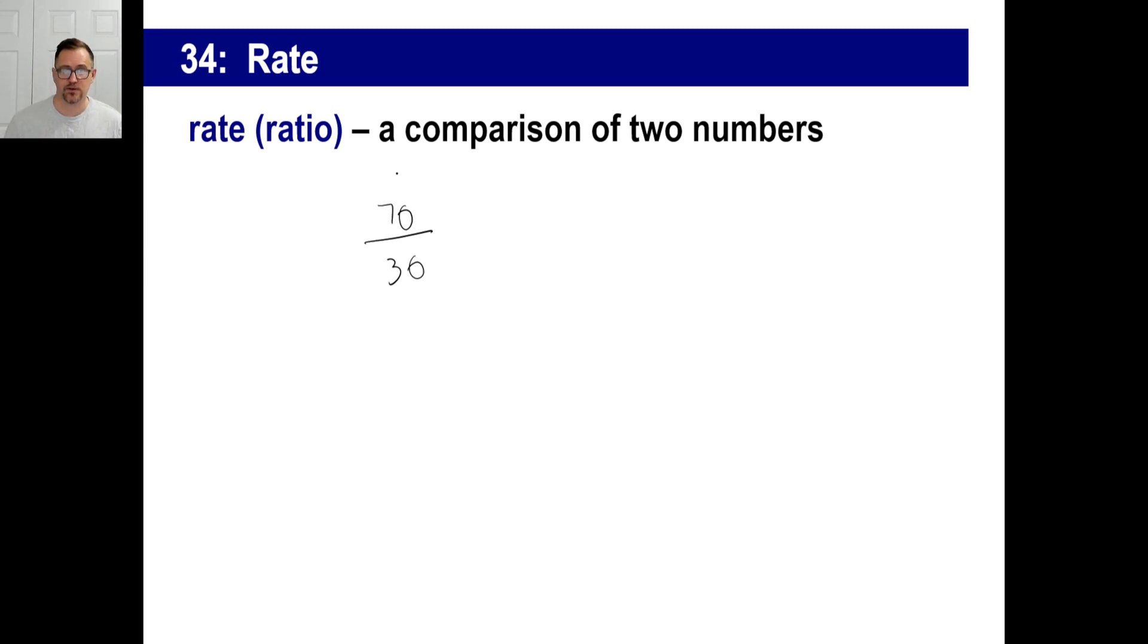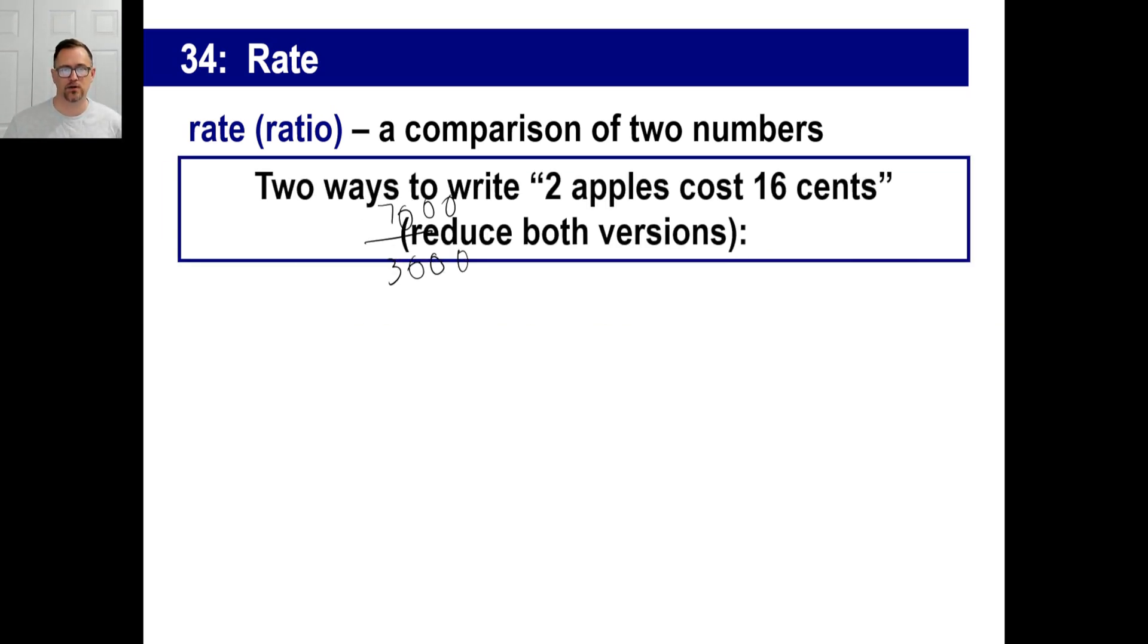It could mean there are 7,000 guys in a class and 3,000 girls in the class. In that case, ladies, run. Run as fast as you can. So, yeah, a ratio just means that's the lowest broken down, reduced rate or comparison of two numbers in a class or something like that. So, we can look at things two different ways. And this is interesting.